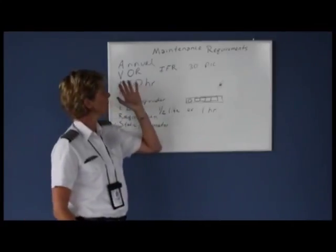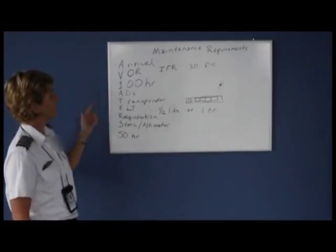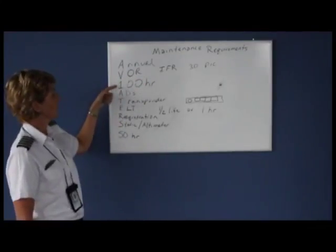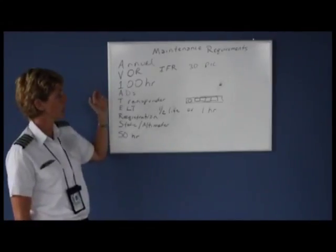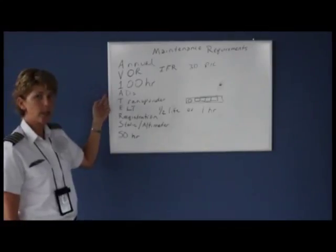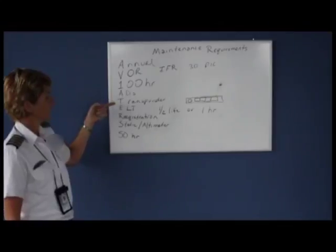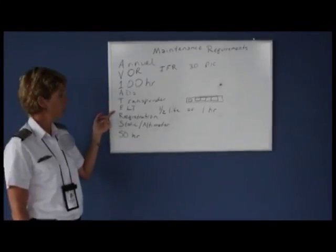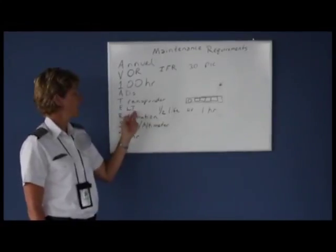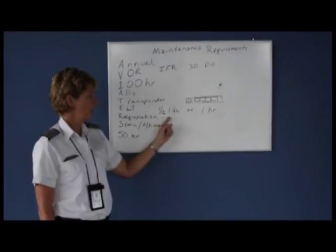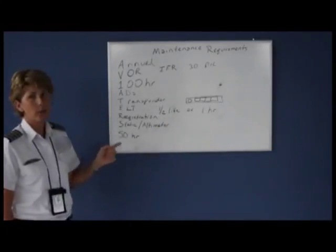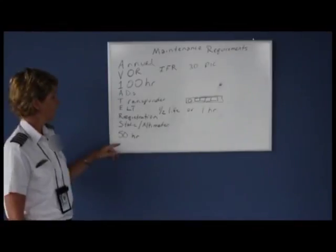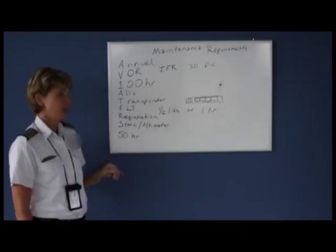So your memory aid for aircraft maintenance requirements is AVIATORS 50: Annual is signed off by an IA; VOR check is done by the pilot every 30 days if flying in the clouds; the 100-hour inspection is only required if the aircraft is for hire; ADs are airworthiness directives and must be complied with; Transponder is every 24 calendar months by the avionics technician; ELT is every 12 calendar months with batteries changed at half-life or one hour cumulative use; Registration is every three years; Static source and altimeter are every 24 calendar months; and the 50-hour is optional preventive maintenance.